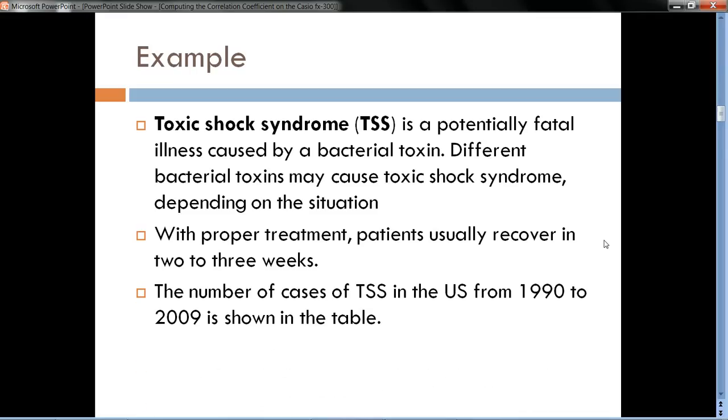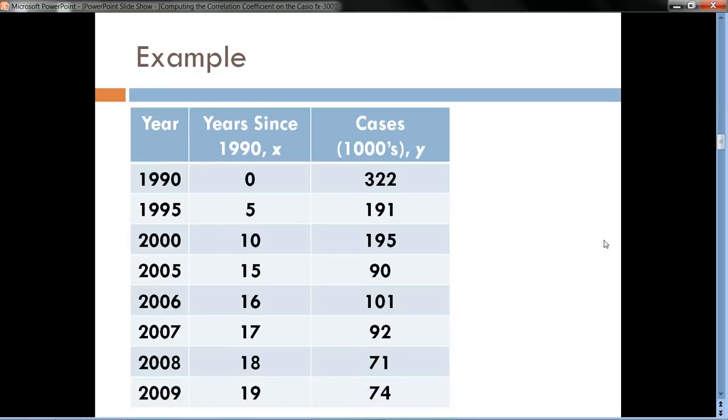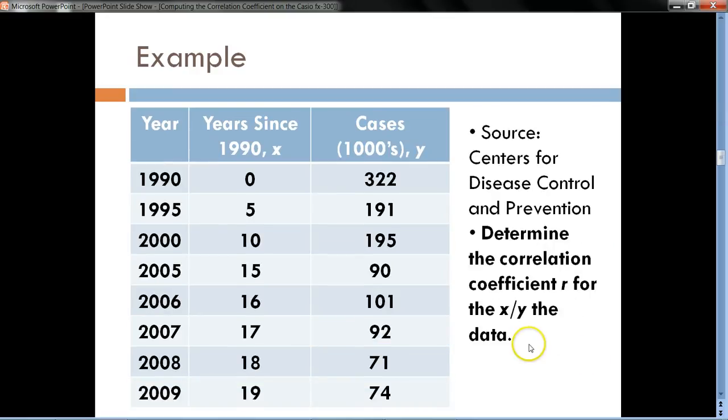Now, the number of cases of toxic shock syndrome was recorded by the Centers for Disease Control and Prevention in selected years from 1990 to 2009. So here's that data right there, and we want to compute the correlation coefficient between X and Y here, where X represents the number of years since 1990.